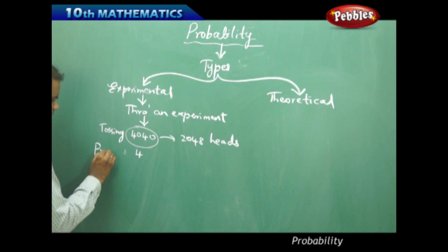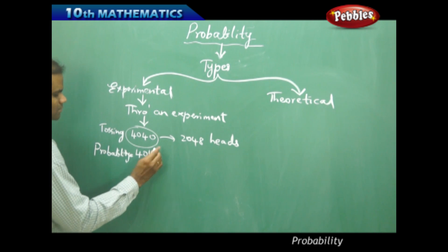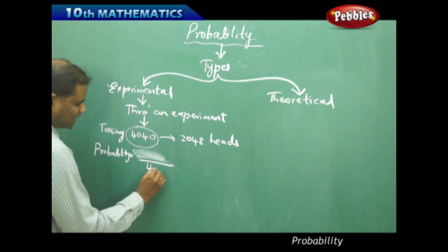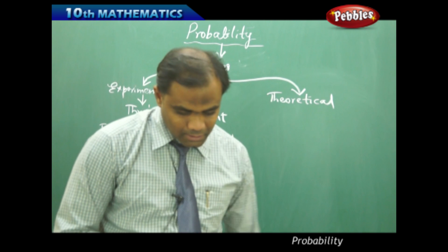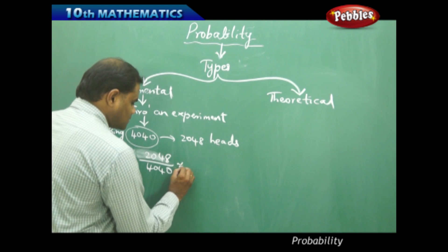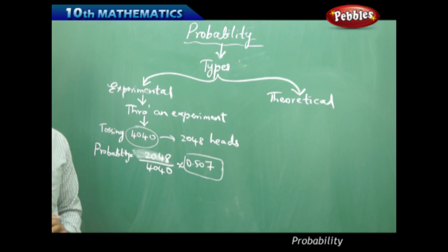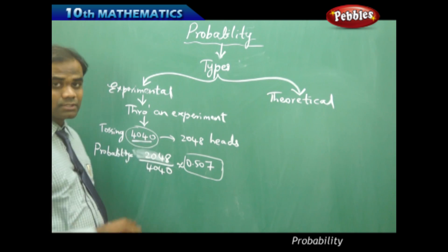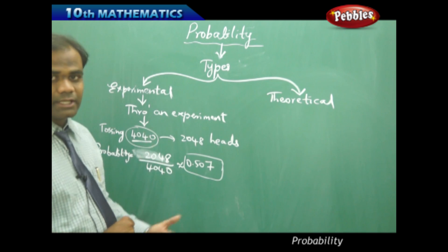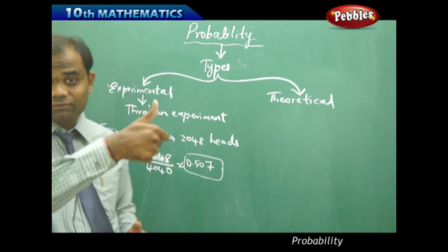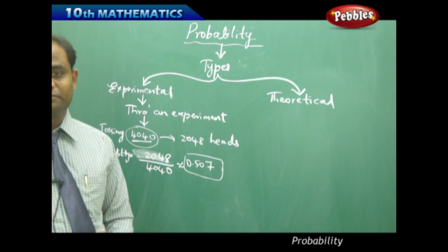He calculated the probability as 2048 heads out of 4040 total tosses, which gave the value 0.507. Now, if we increase the number of tosses to 10,000 times, the number of heads also changes and the outcome becomes harder to predict.